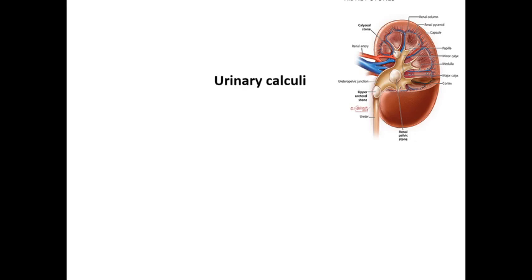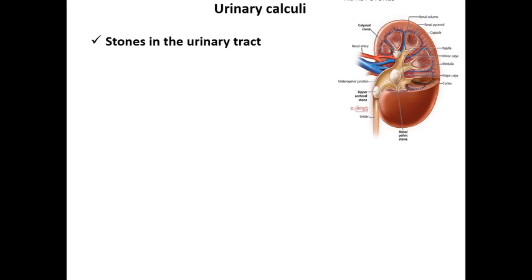Now we will see some common genitourinary disorders and their management. We are going to discuss urinary calculi, bladder cancer, and cancer of the prostate. Urinary calculi are stones in the urinary tract — the kidneys, ureters, urinary bladder, and urethra. We give special names depending on the site: if stones are found in the kidneys, they are called nephrolithiasis; if found in the bladder, urolithiasis.